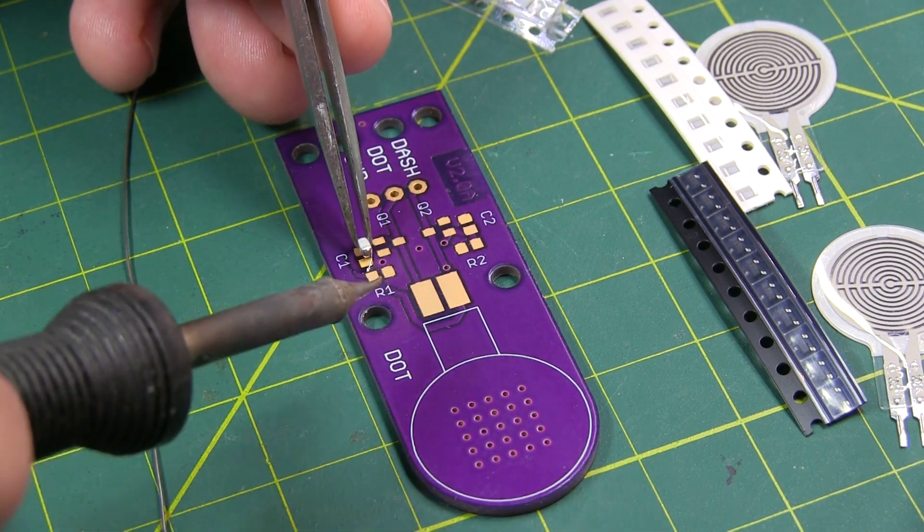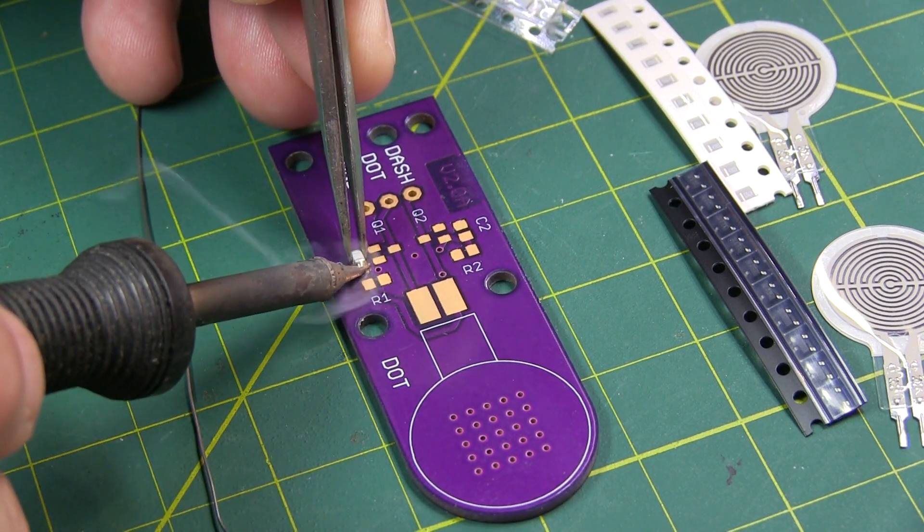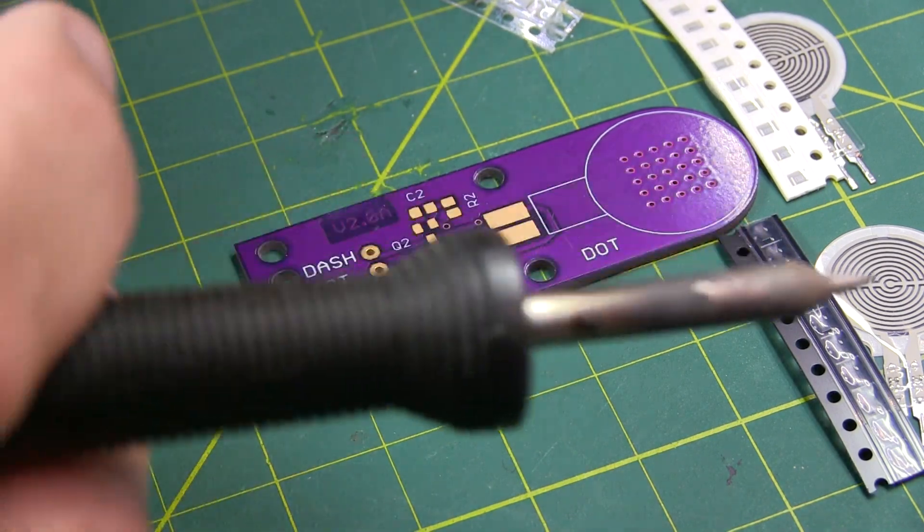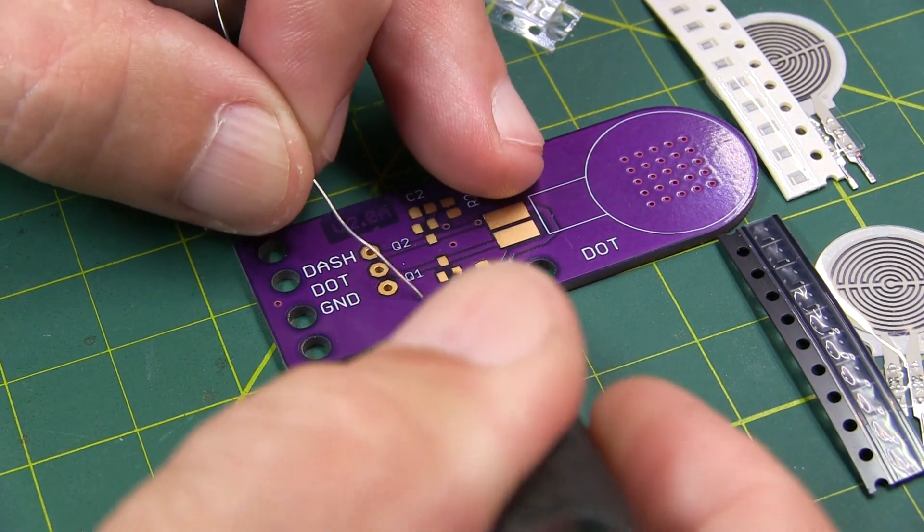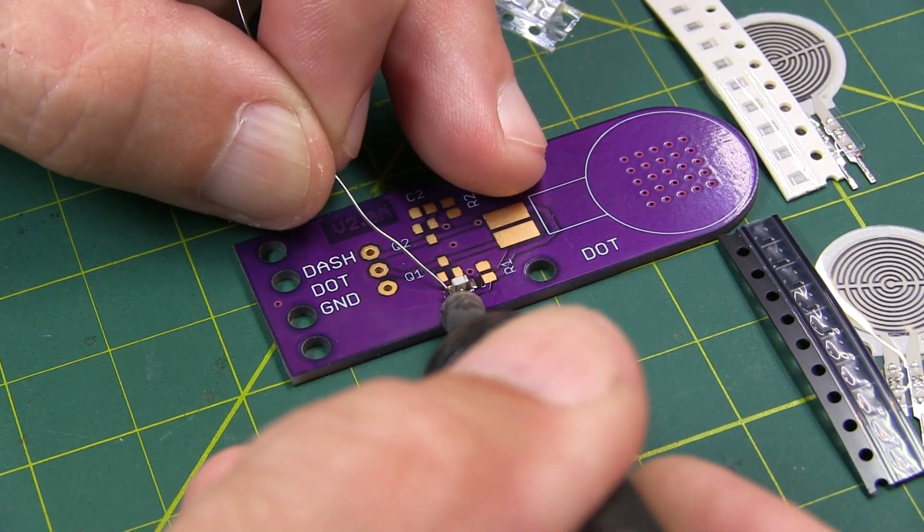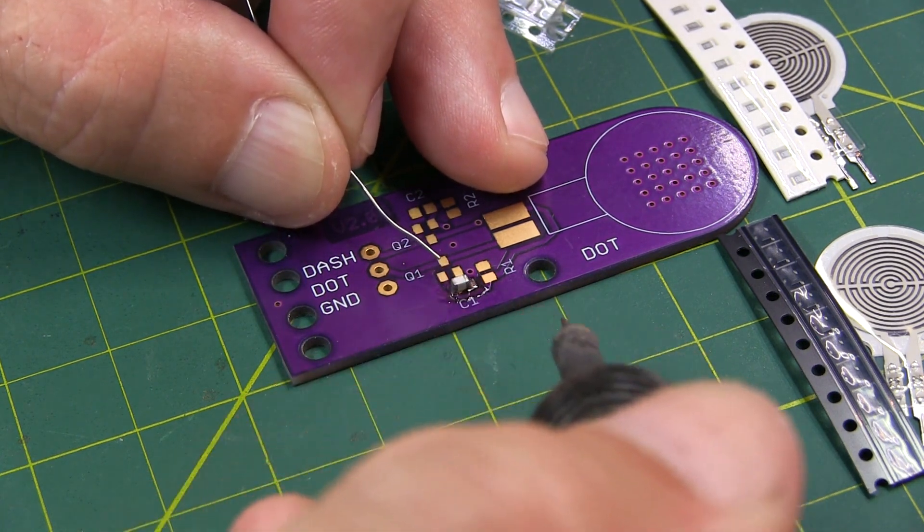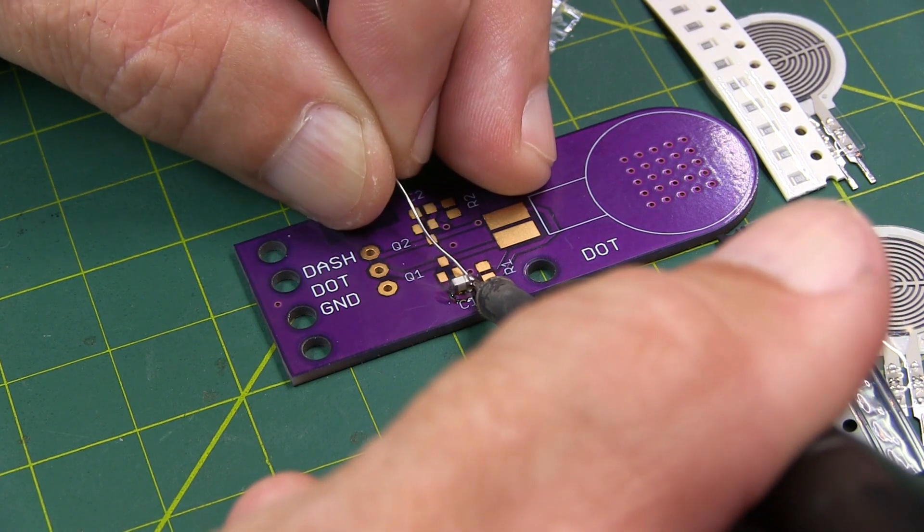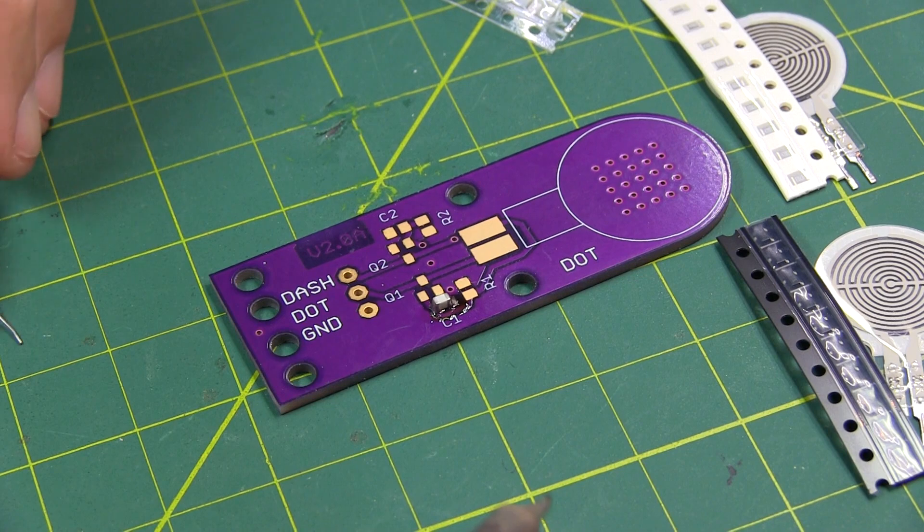So next we'll take this capacitor we just tinned and bring it over to the pads, and I'm just going to hold it in place with the tweezers and tack this one end down to the board just like that. So with that one end in place, we'll take my fine solder here, my fine-tipped iron, and just solder the other end of the capacitor to the pads. And then I'm going to just touch up the other side as well. And the capacitor's down.